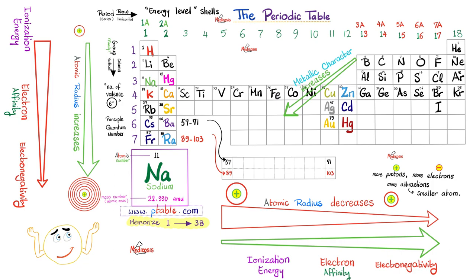If you remember my discussion on the periodic trends: as you go downwards, electronegativity decreases; but if you go up, electronegativity increases. And if you go right across a period, electronegativity also goes up. The most electronegative atom is fluorine. So going right towards fluorine, electronegativity increases; going upwards towards fluorine, electronegativity increases; but going down away from fluorine, it decreases. Fluorine is more electronegative than chlorine, chlorine more than bromine, and bromine more than iodine.